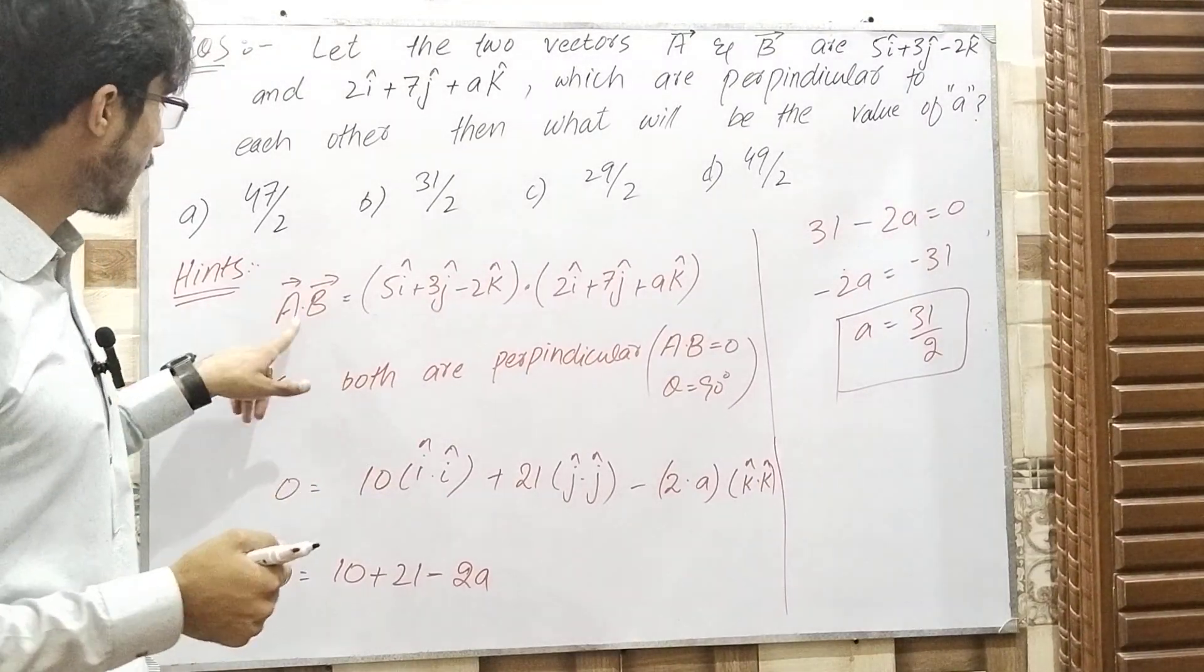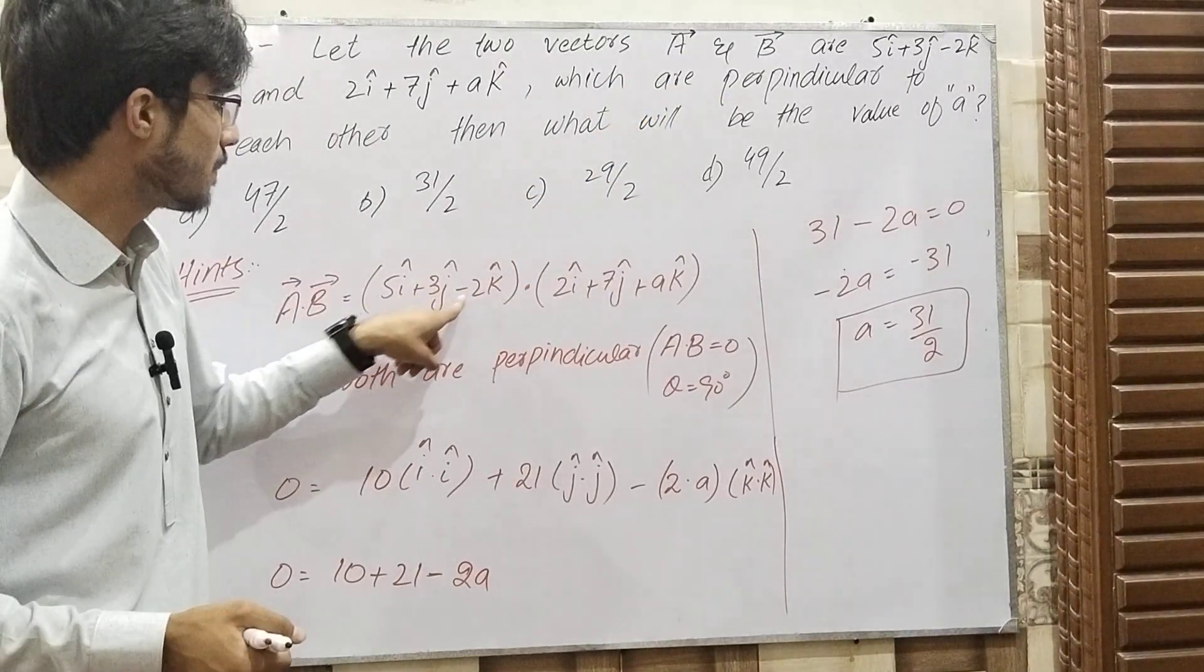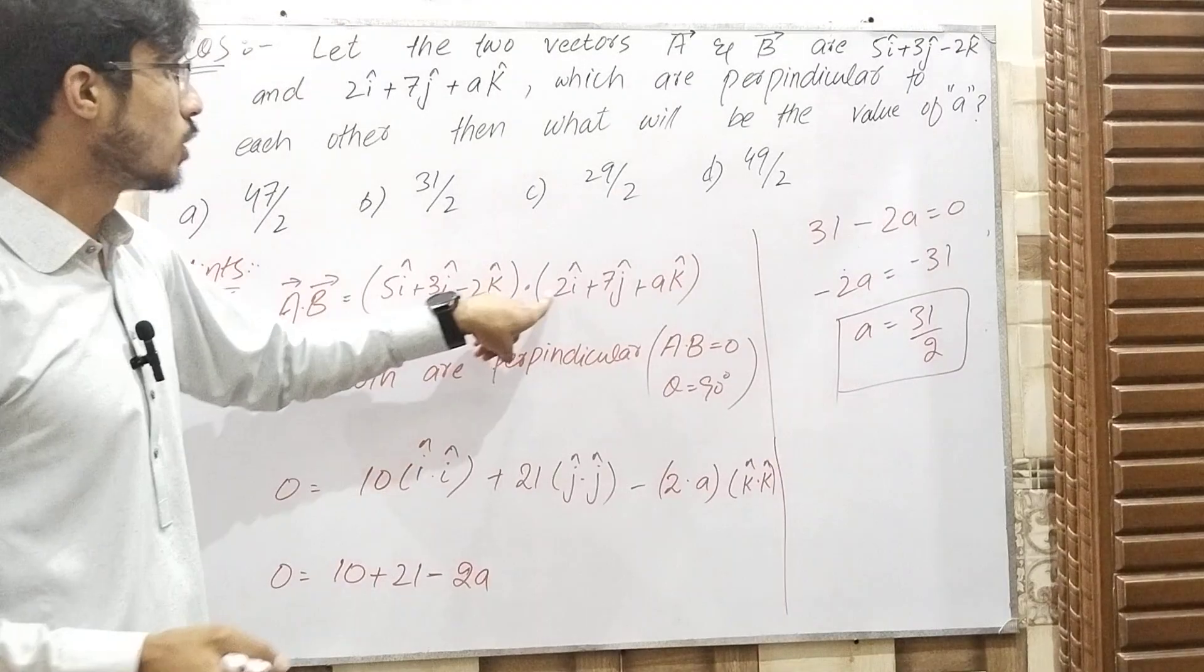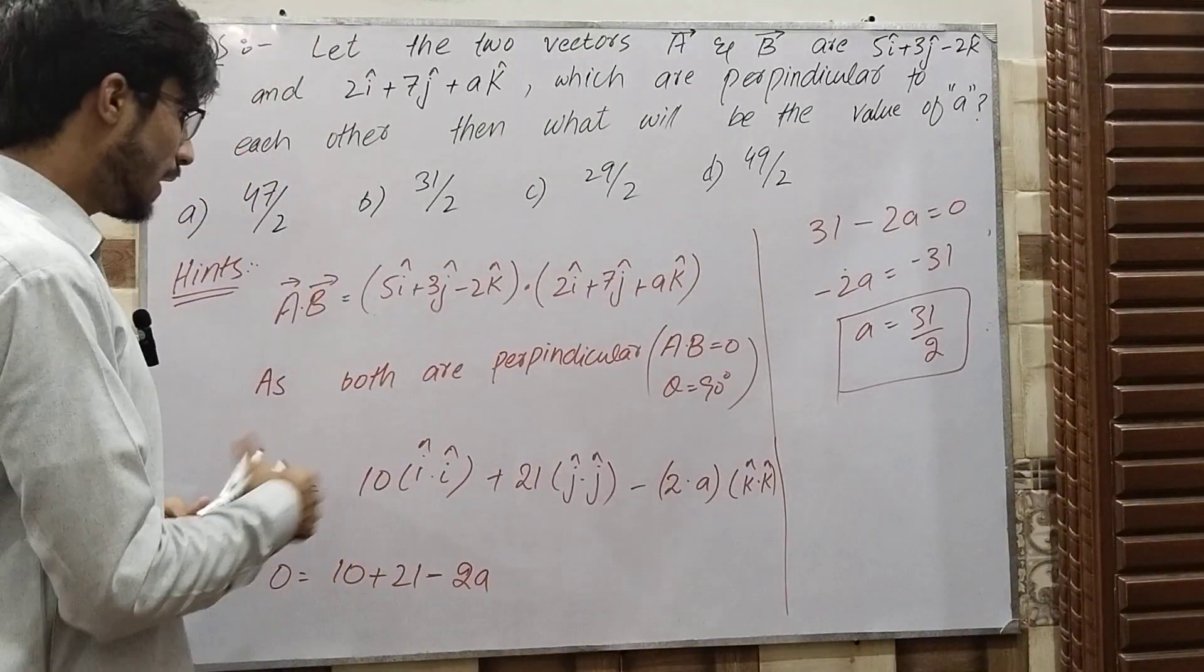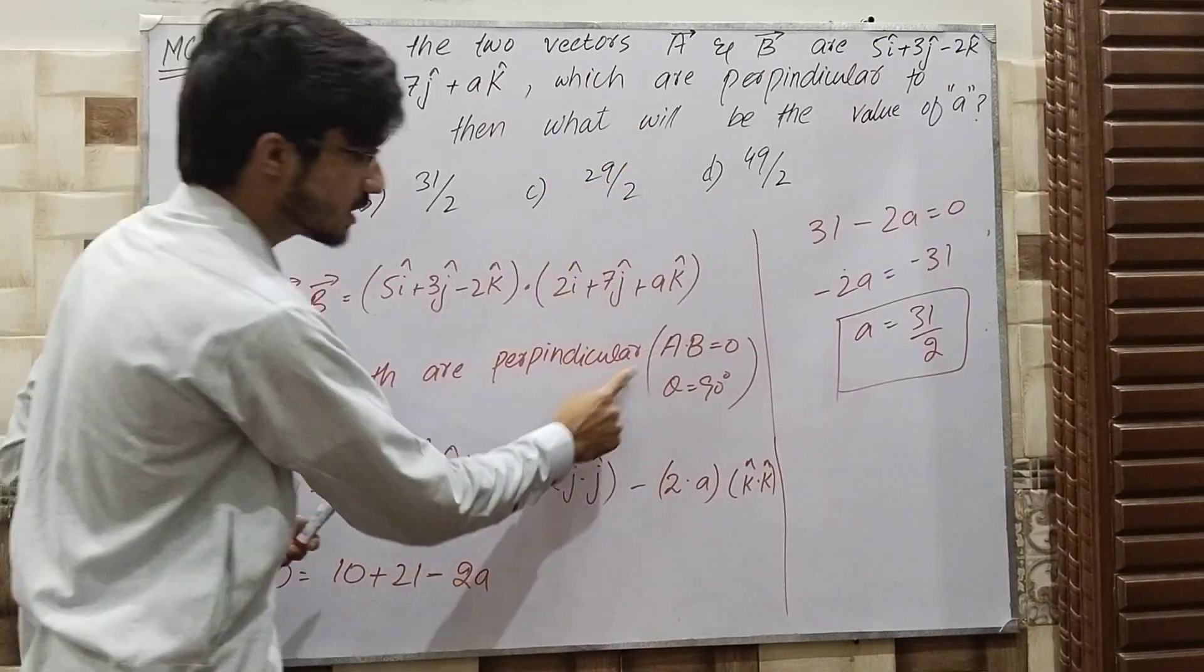For this, we use A·B = 0. So we have (5i + 3j - 2k)·(2i + 7j + ak). Since both are perpendicular, the dot product equals zero.